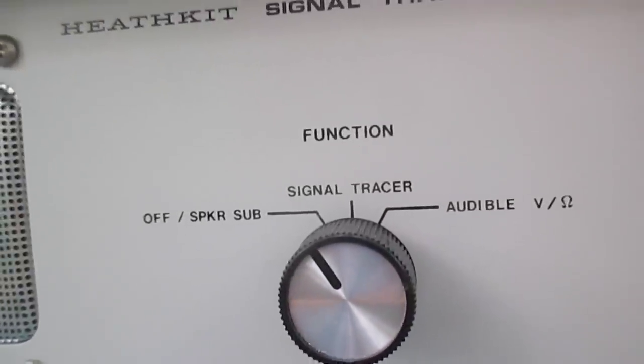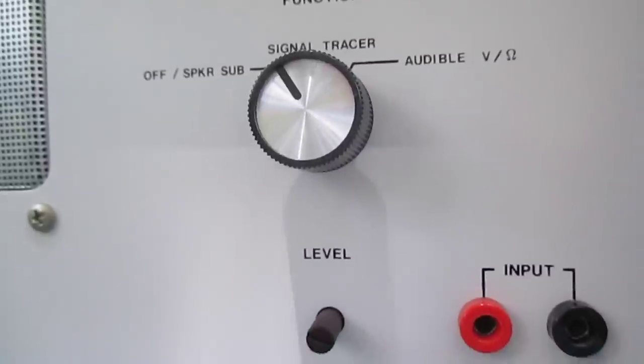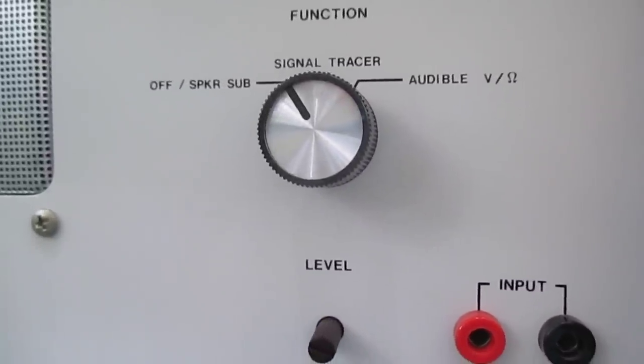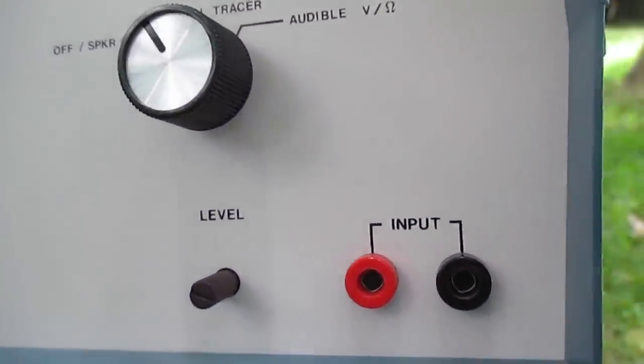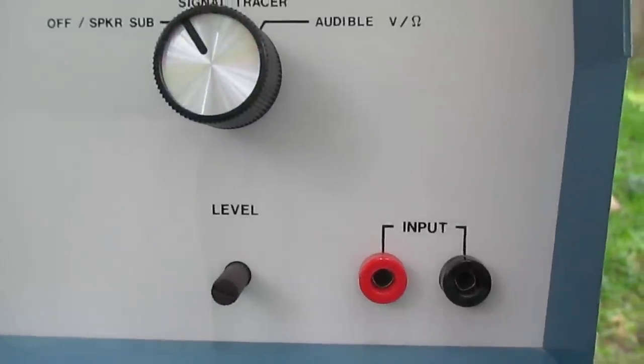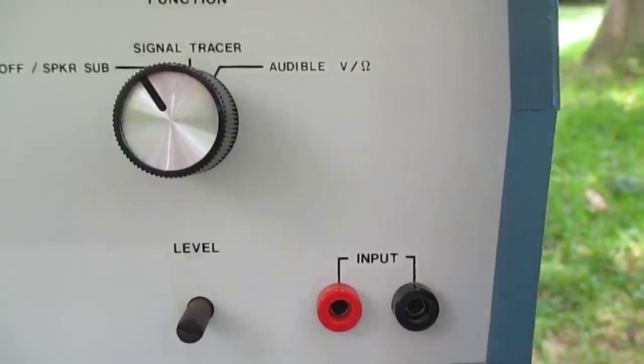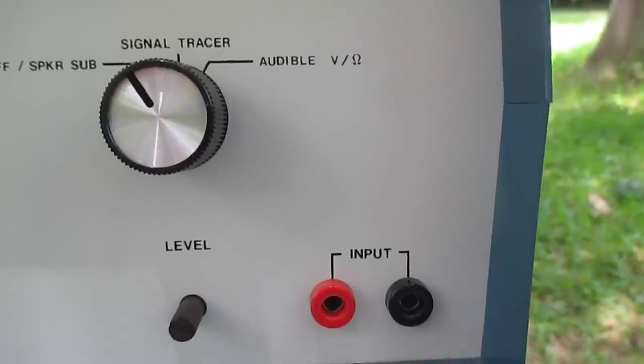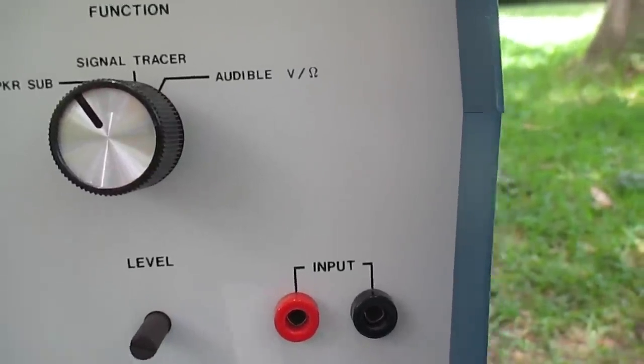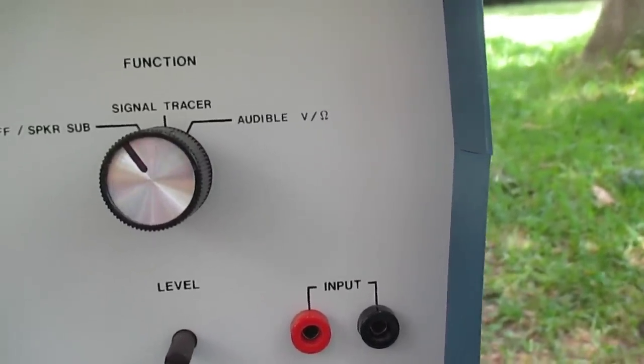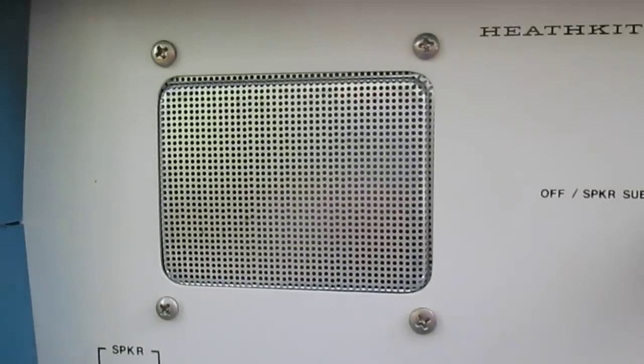Then we have a signal tracer position which we set it to that position and power the instrument on. We plug our probe into this input jack and I'll show you the probe in just a minute.